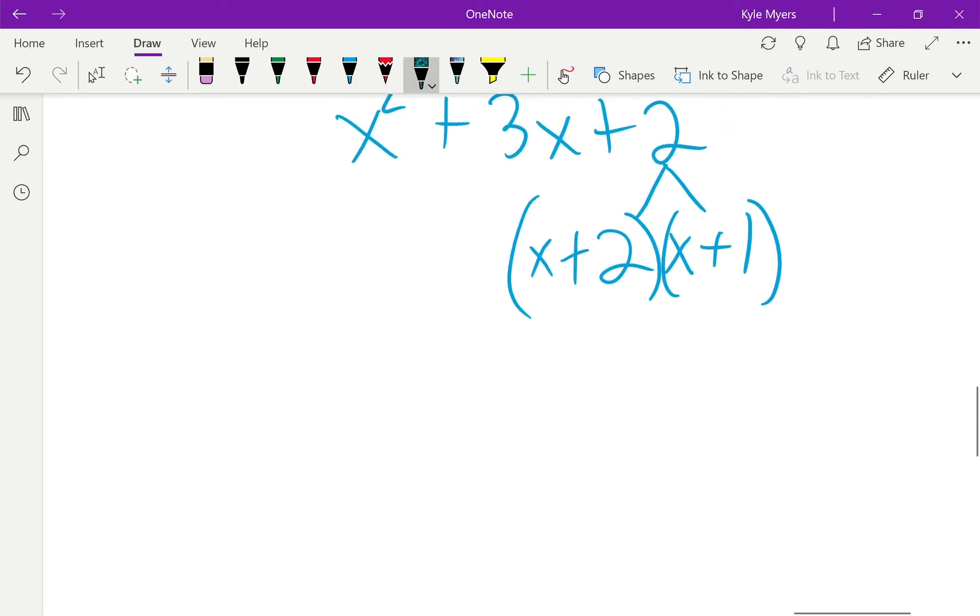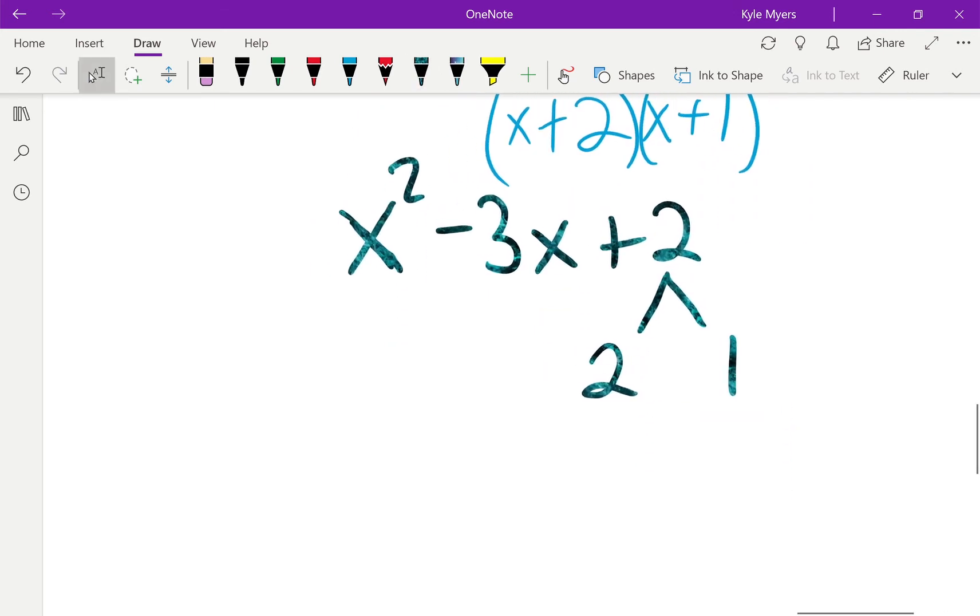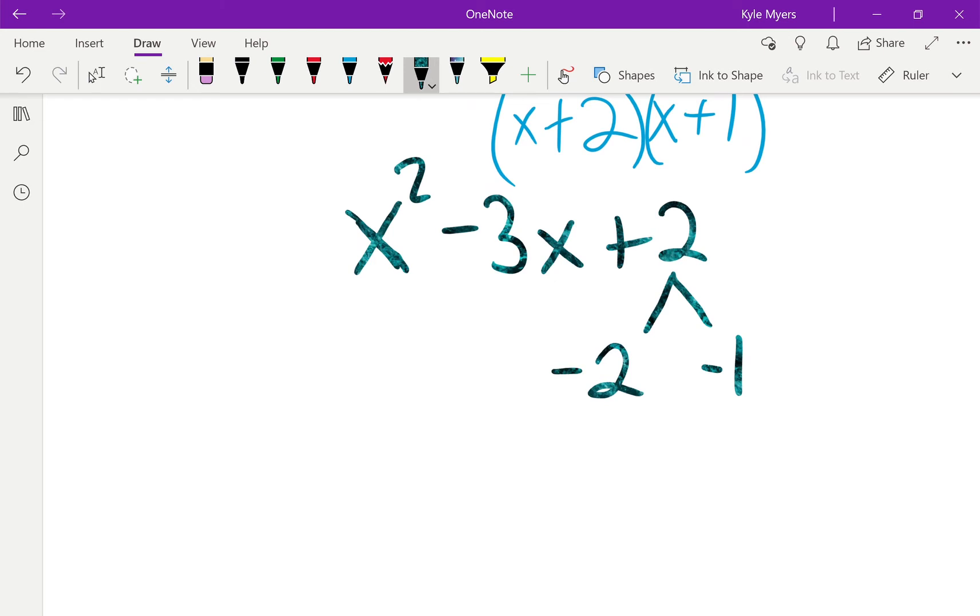And then for the last one, it's going to be really similar. x squared minus 3x plus 2. And again, there's only two things that give you 2 when you multiply, right? 2 and 1. But this time, we want them both to be negative. I don't want to just make one of them negative, because I could get a negative number if I made the 2 negative and not the 1, but I need to get a positive 2 still when I multiply. So they both have to be negative.